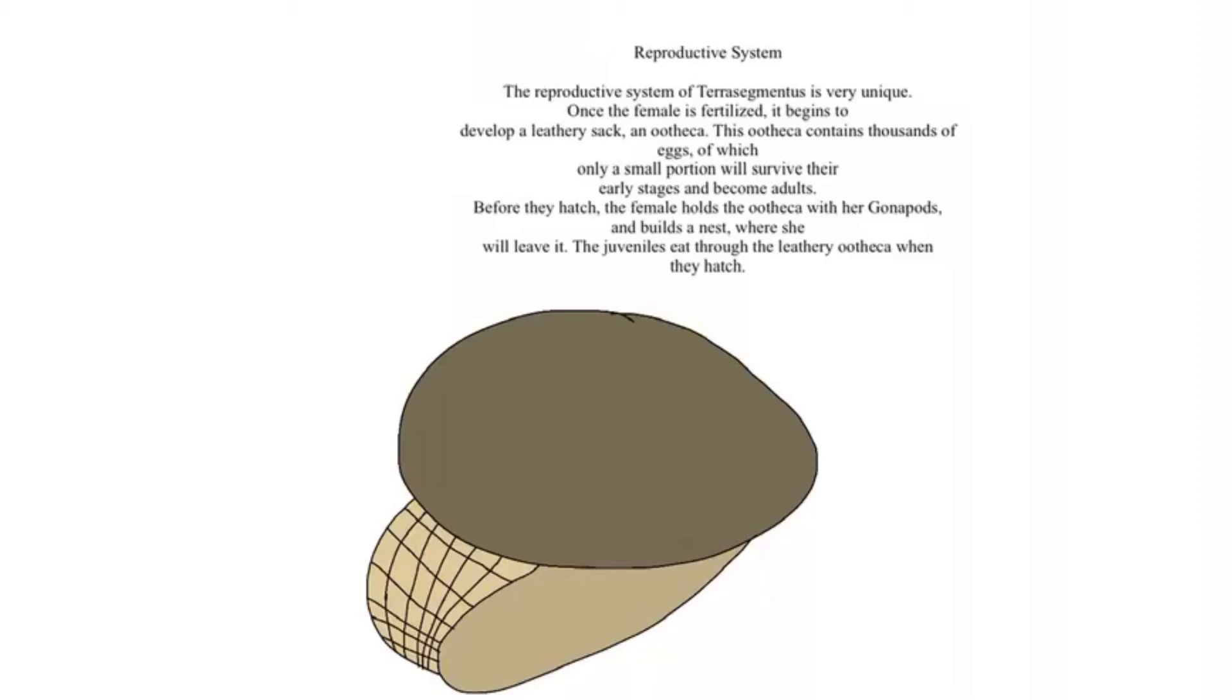This ootheca will allow oxygen to diffuse through the membrane, and inside of it is already pretty much filled with water, so the hundreds of eggs will not desiccate.